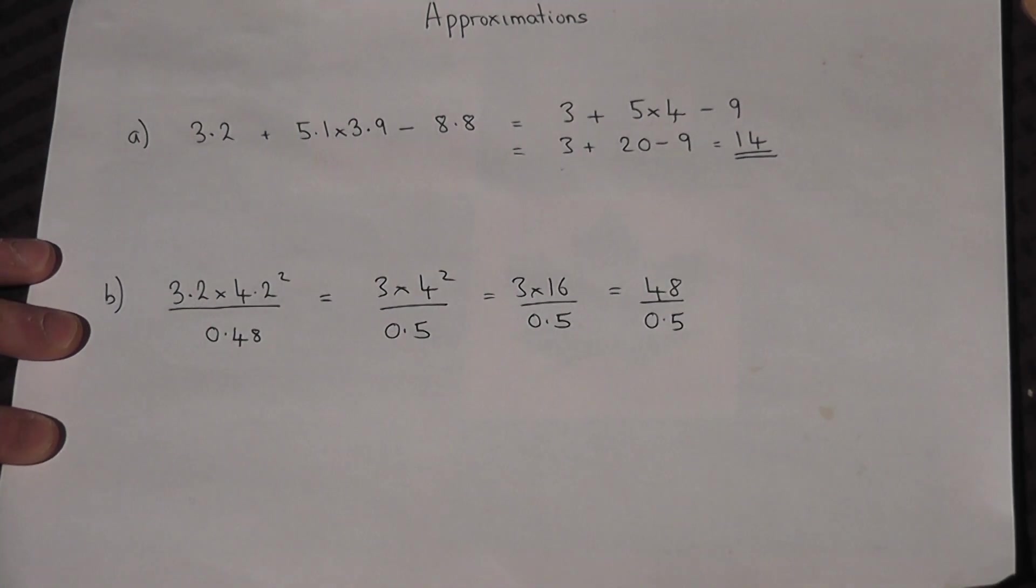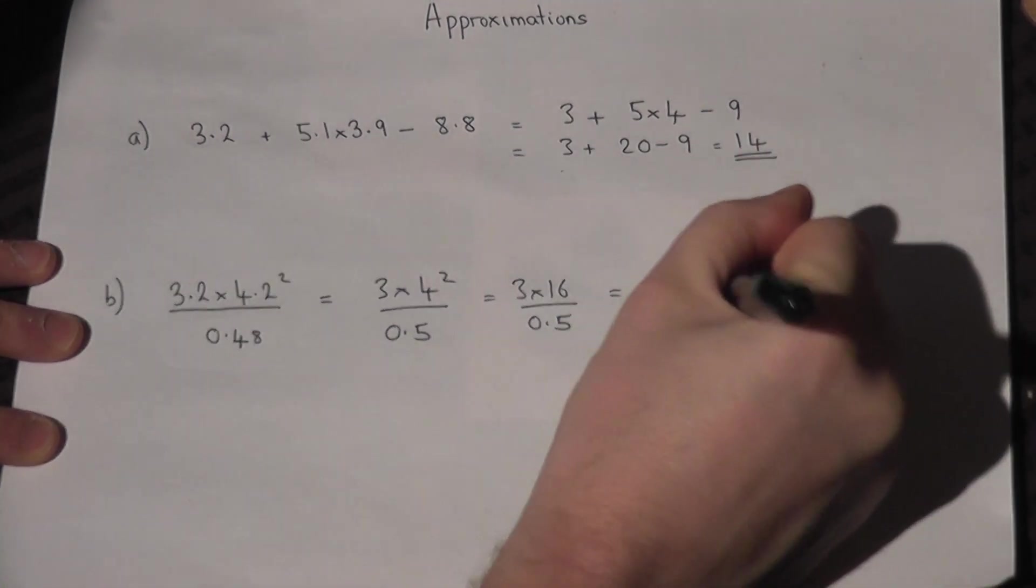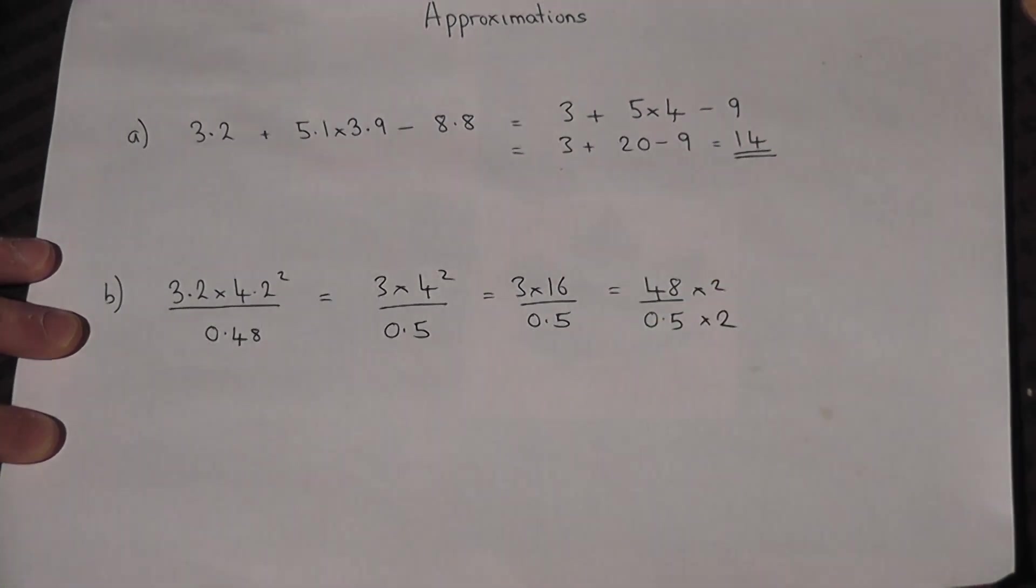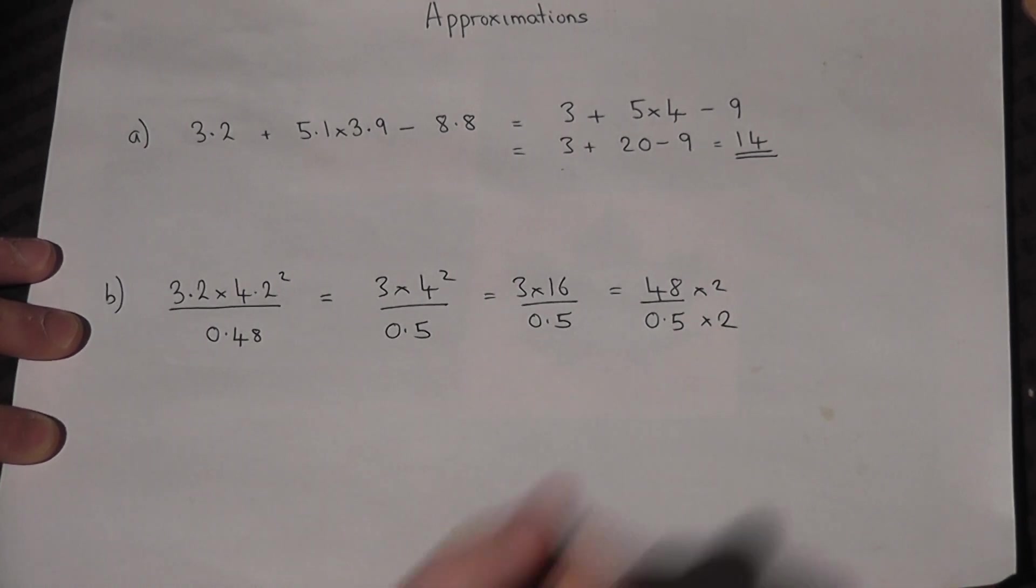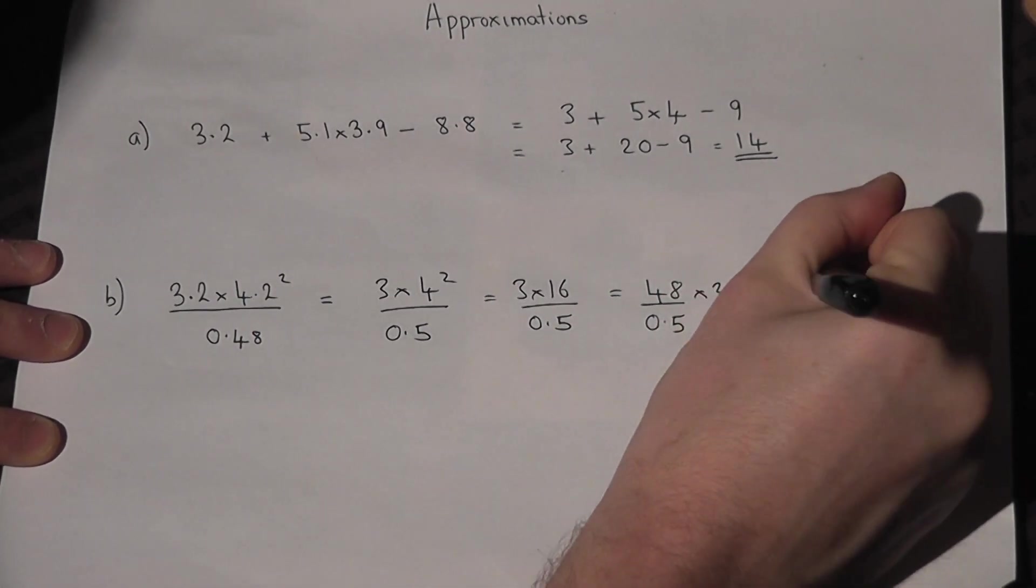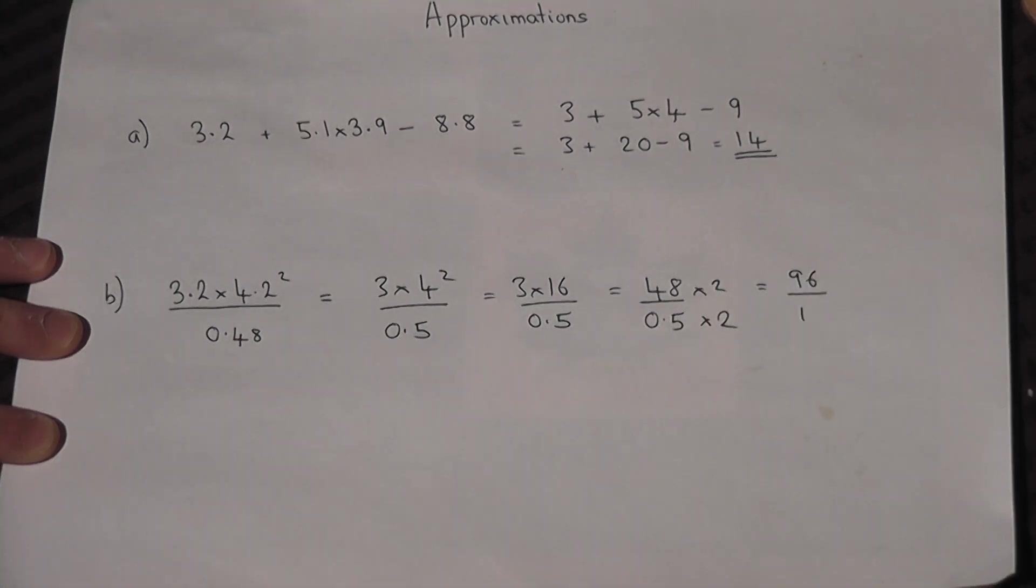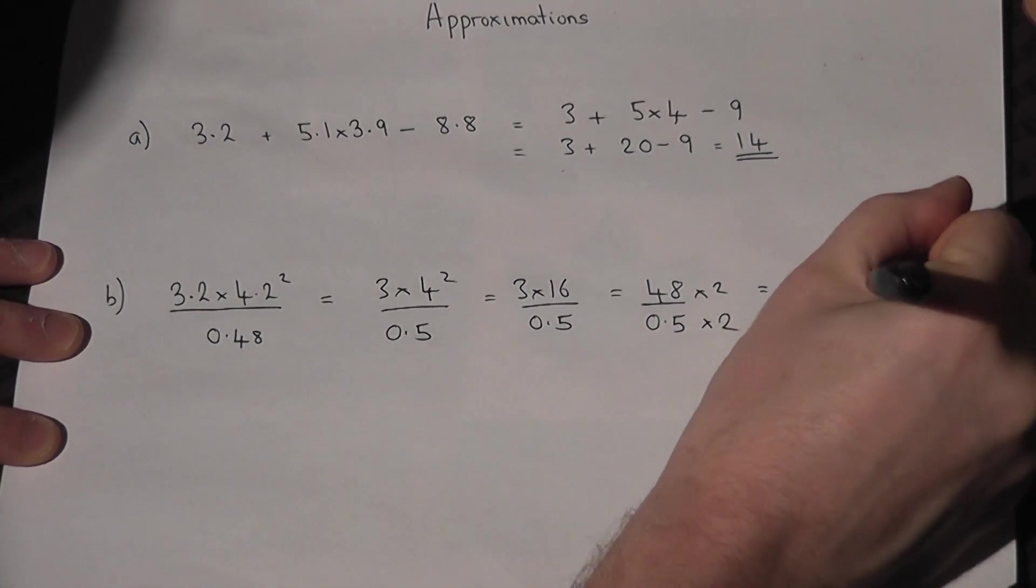The next trick is to times top and bottom by 2 to make the bottom a whole number. That becomes 96 over 1. The answer is therefore 96.